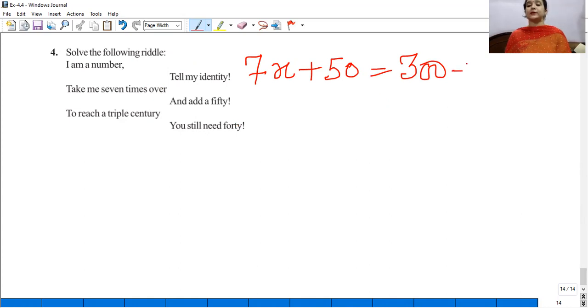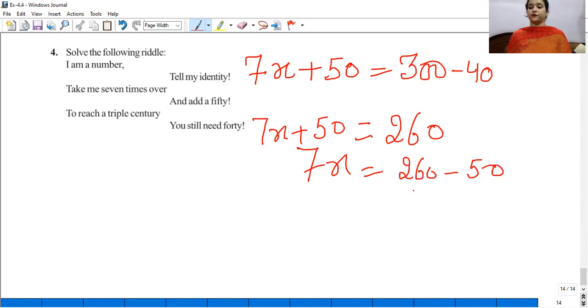To reach a triple century, you still need 40. To reach triple century, you still need 40, meaning subtract 40 from triple century. That's 260 equals 7x plus 50. So 7x is 260 minus 50, that is 210.